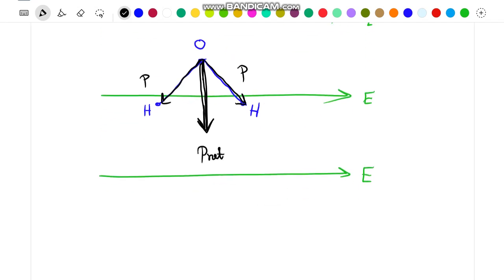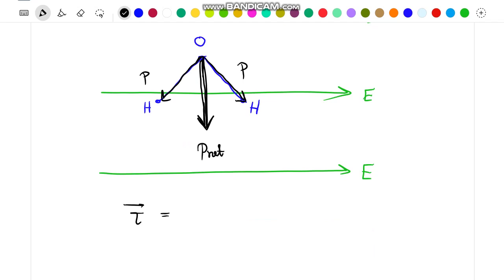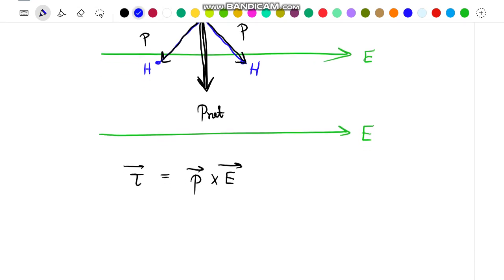Now we know that the torque is given by the expression P cross E. With the help of right-hand thumb rule, we can say that the direction of this cross product is outwards, that is the torque will act outwards.